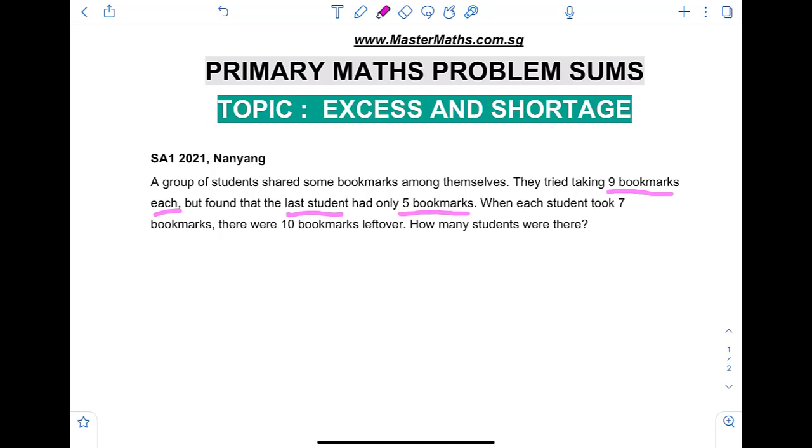Now when each student took seven bookmarks, there were ten bookmarks left over. So this is an excess scenario. How many students were there? To do such questions, it's good to list out the two scenarios.